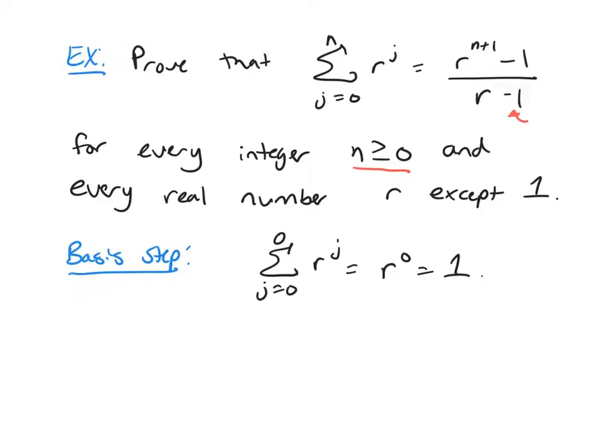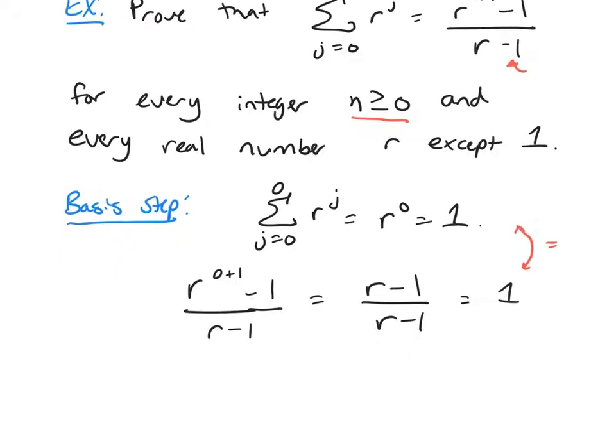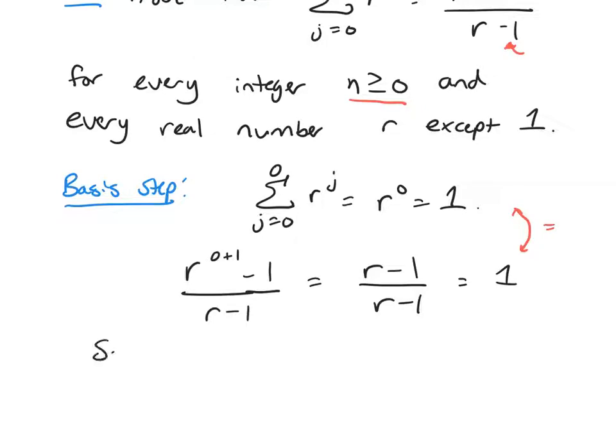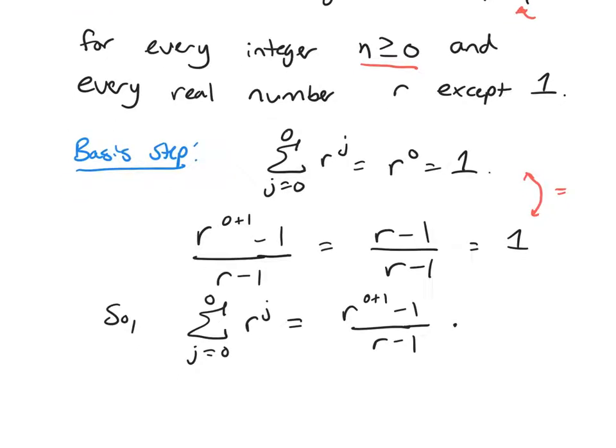And now let's plug it in to the right-hand side, r to the 0 plus 1 minus 1. So this would just be r minus 1 over r minus 1 or 1. And if you look, these two things right here, these are equal. So we've established the formula is true for n equals 0. That completes our basis step.